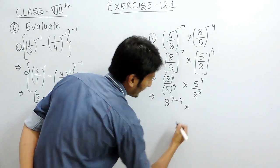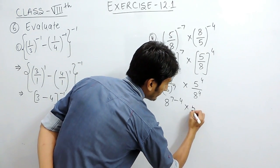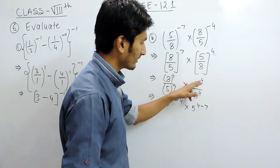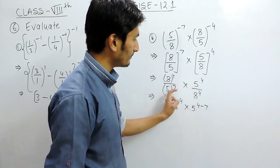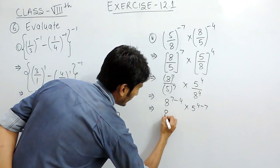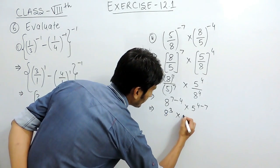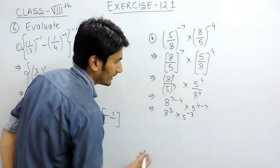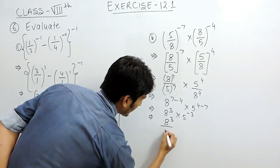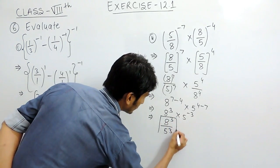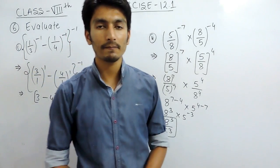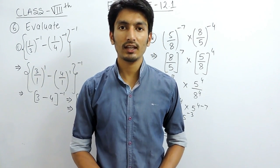Similarly we multiply. This is 5 raise to power 4 minus 7, because here also the bases are same, so the power should be subtracted. This gives 8 raise to power 3 multiplied by 5 raise to power minus 3. Again, if you want to convert this power into positive, we write it in the denominator, and the answer is 8 raise to power 3 upon 5 raise to power 3. So this is how we can solve this question. Thank you.